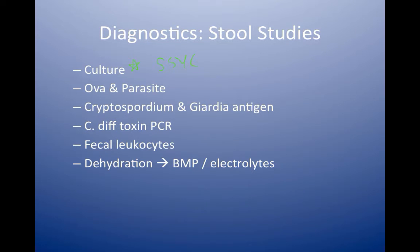As part of this test, you'll also get a test for Shigatoxin, and the lab will report this out as well. Ova and Parasite is good for people who are travelers, and this will look for Entamoeba as well as Cryptosporidium and Giardia.